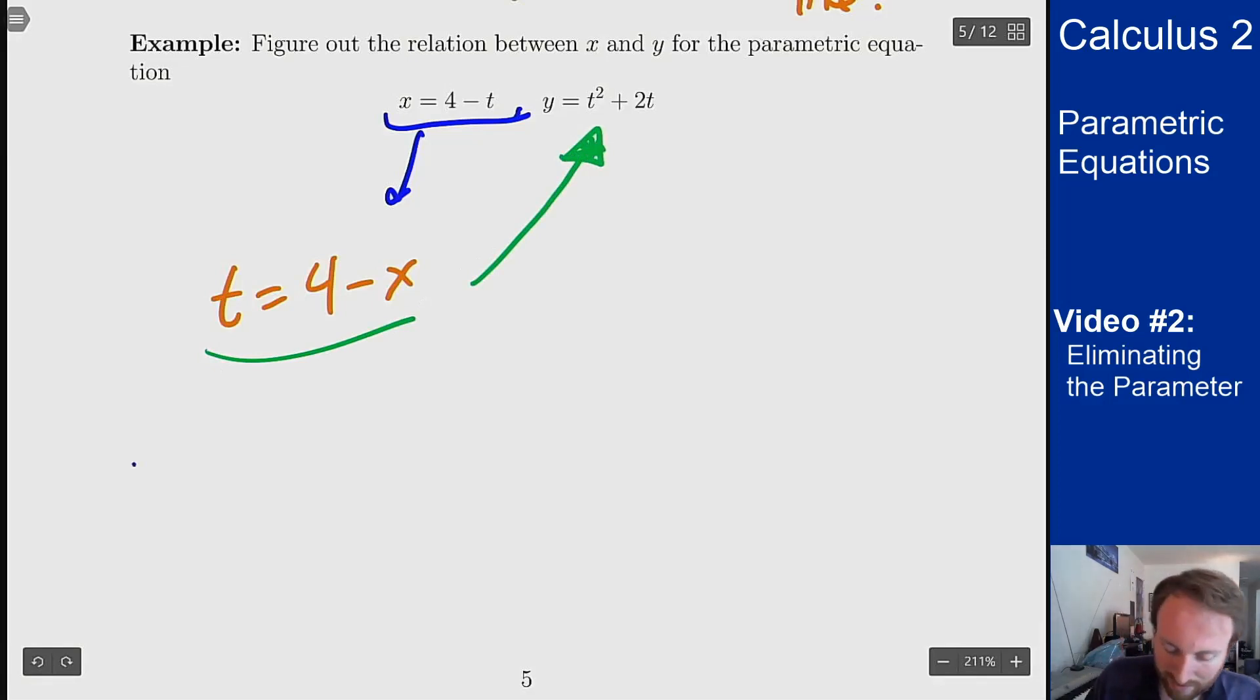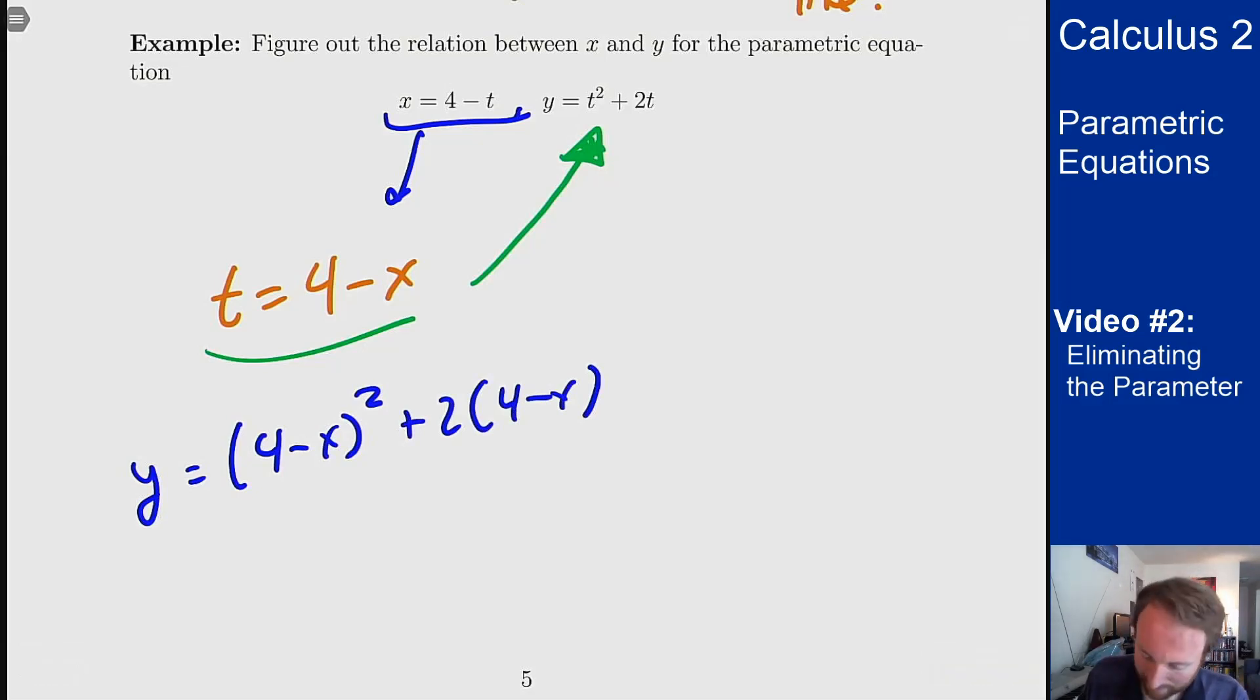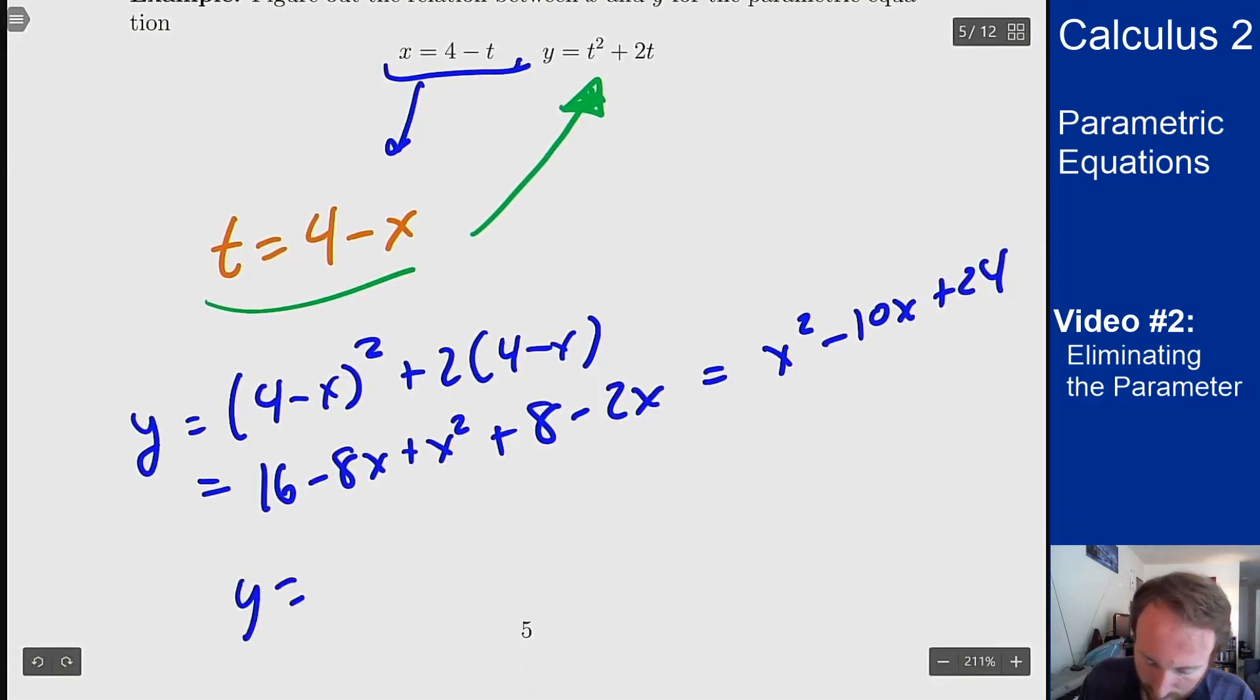So what I'll get from that is that y equals 4 minus x squared plus 2 times 4 minus x. Now I can expand this out and see what I get. And we do in fact get a quadratic which we can now factor: y equals x minus 6 times x minus 4.